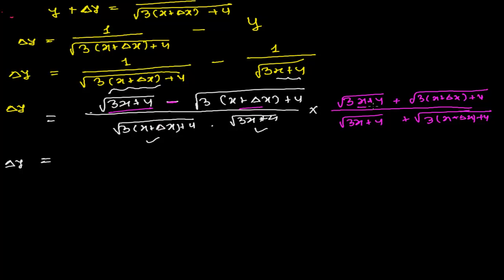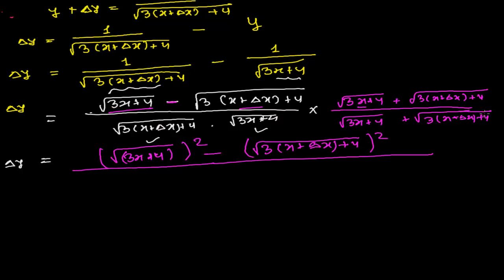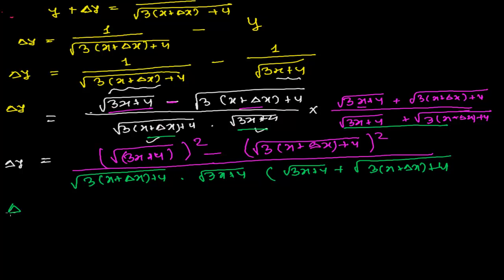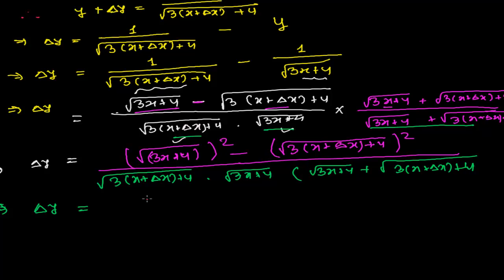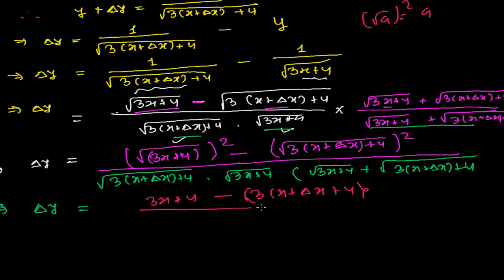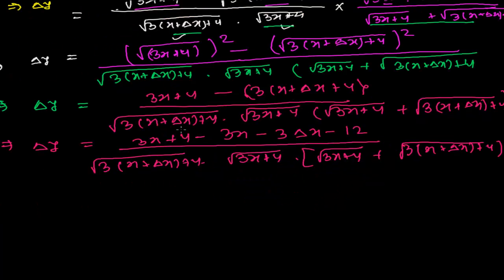Since this is of the form (a − b)(a + b) = a² − b², the numerator becomes (3x + 4) − (3(x + δx) + 4). Expanding this: 3x + 4 − 3x − 3δx − 4, so the 3x terms and the 4 terms cancel out.